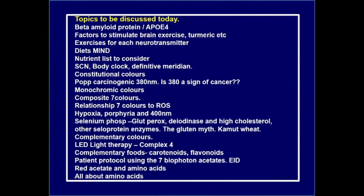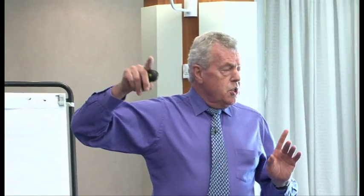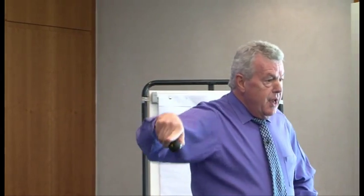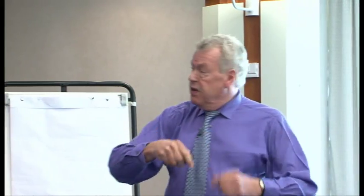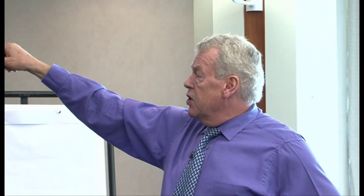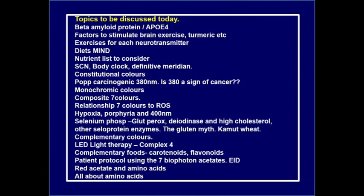Topics we want to discuss today — some will be briefer than others. We want to introduce subjects we covered in the memory to dementia module back in March. We didn't have the beta-amyloid protein as a marker at that time, but we now have that, along with its relationship to ApoE, which most of you have as a marker. Then we'll look at factors to stimulate the brain: exercise, turmeric, and other epigenetic factors.